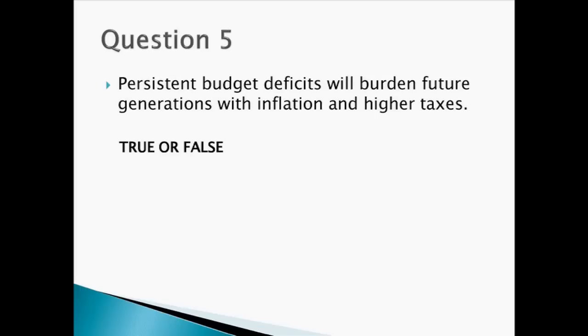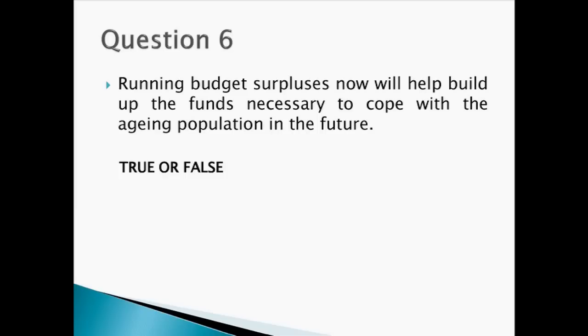Question five: Persistent budget deficits will burden future generations with inflation and higher taxes. Question six: Running budget surpluses now will help build up the funds necessary to cope with the aging population in the future — true or false? You can tally your results. They're all false.